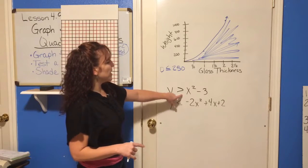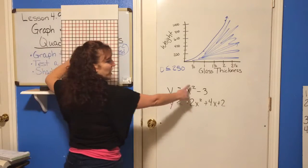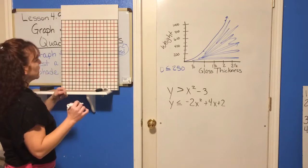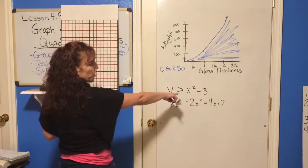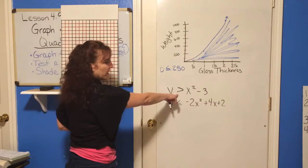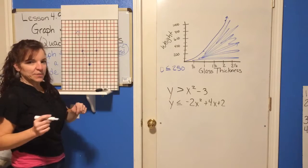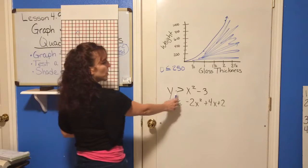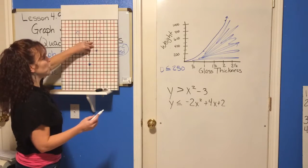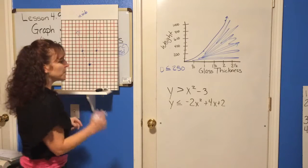For the first inequality, there's no b term so b = 0, and the vertex x-coordinate is 0. Plugging in 0 gives y = negative 3, so the vertex is at (0, negative 3). Plugging in x = 2: 2 squared is 4, minus 3 is 1, giving the point (2, 1). We mirror that point and draw the parabola. Since it's less than, not equal to, this is a dotted line. Testing (0, 0): is 0 greater than 0 minus 3? Yes, so we shade inside this parabola.